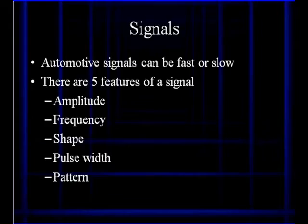There are going to be basically five features of the signal we're going to look at. The amplitude, how big is it? The frequency, the shape, and sometimes the shape is important. Pulse widths, are they what we expect? Are there variations in pulse width that give us information? What does the scope pattern look like?